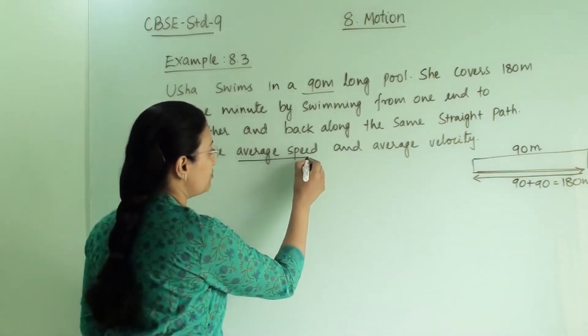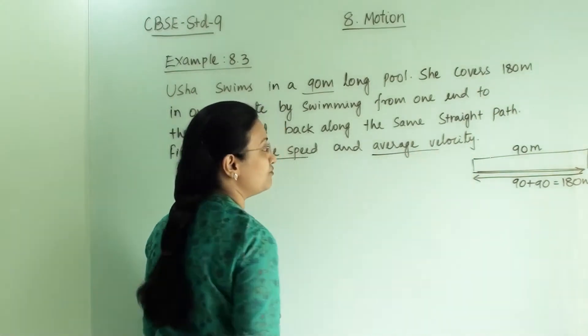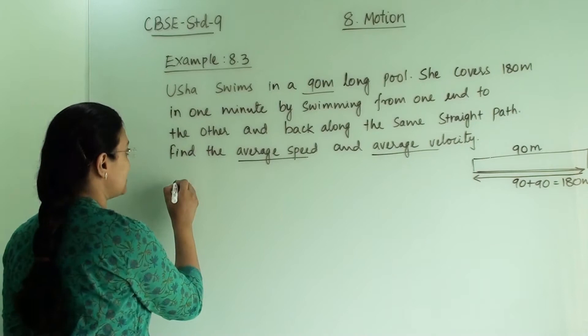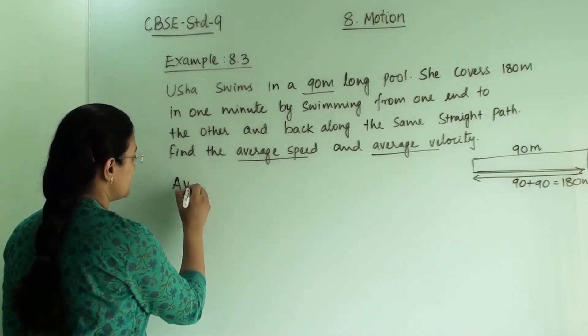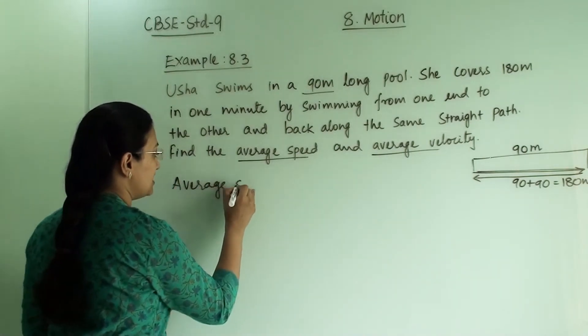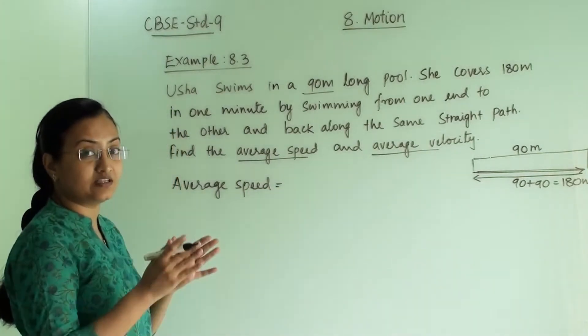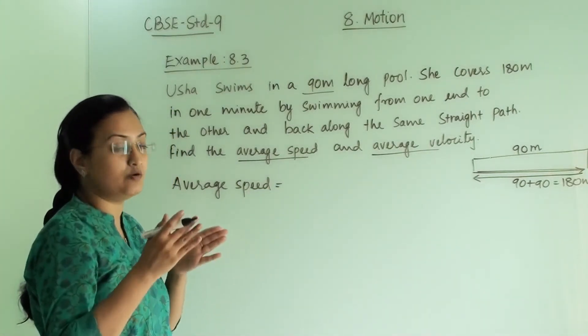We have to find out average speed and average velocity. So let us first find out average speed. Average speed equals to, what is the equation? Total distance divided by total time.